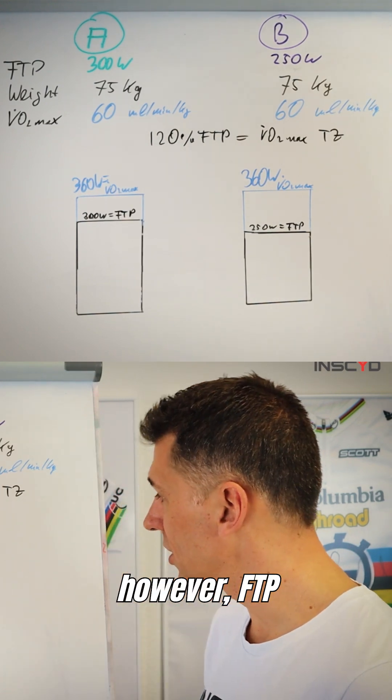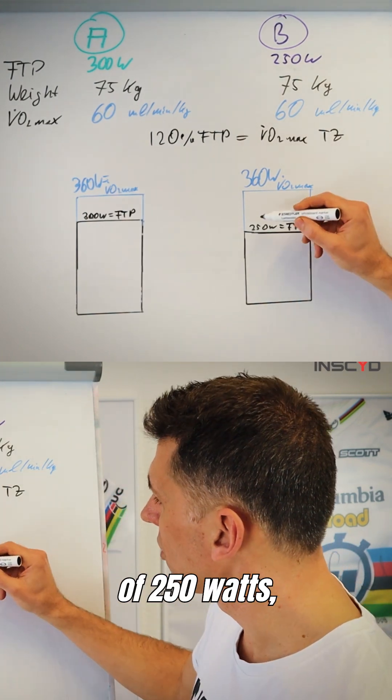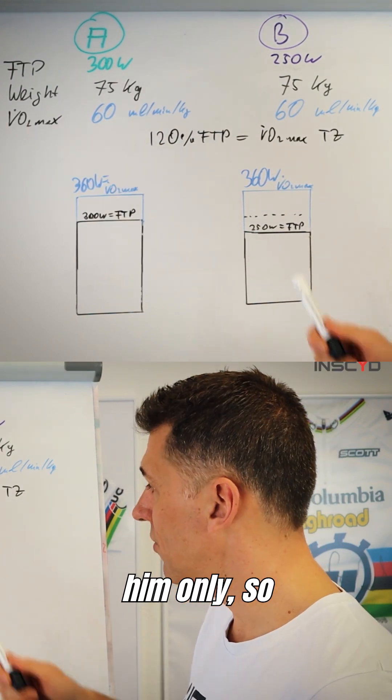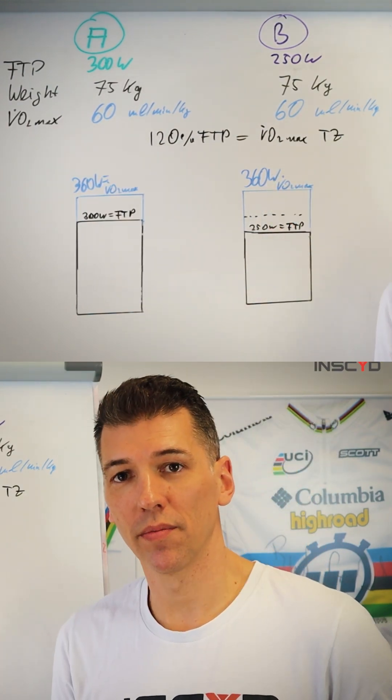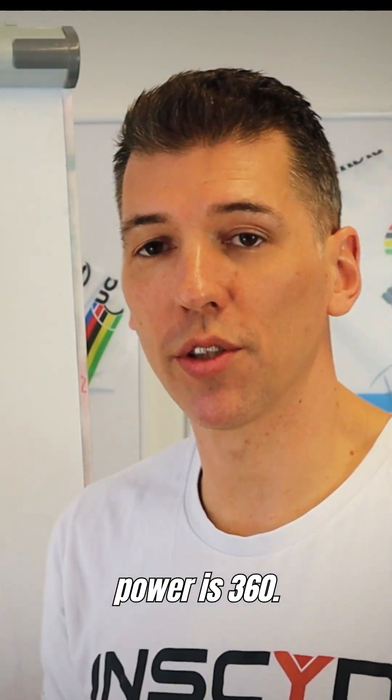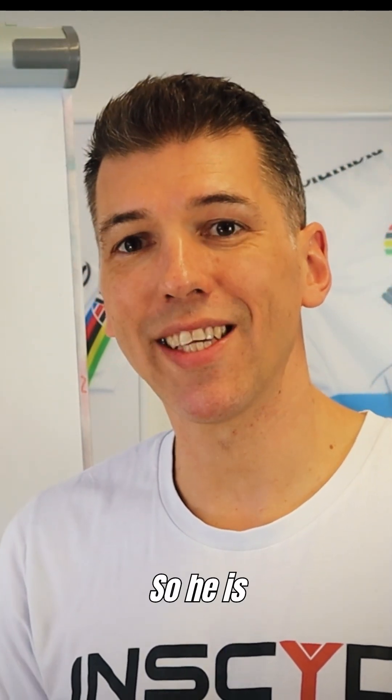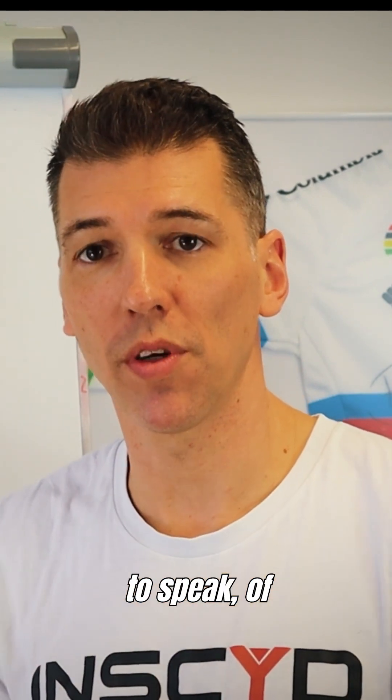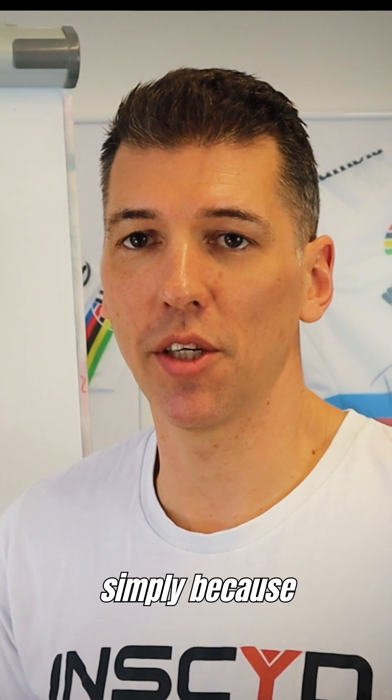Athlete B however, FTP of 250 watts, 120% brings him only to 300 watts. But his VO2max power is 360. So he's exercising not at the same percentage of his VO2max.